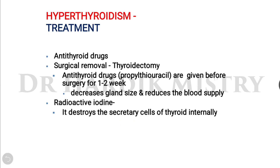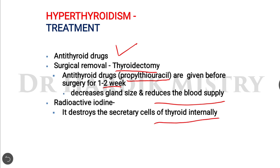Treatment of hyperthyroidism includes antithyroid drugs such as propylthiouracil, given one to two weeks before surgery to normalize thyroid levels, followed by thyroidectomy to decrease gland size and reduce blood supply. Radioactive iodine is also used to internally destroy the secretory cells of the thyroid gland, reducing the number of cells that secrete thyroid hormones.